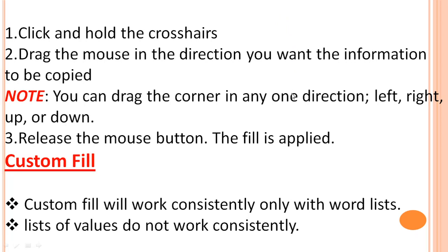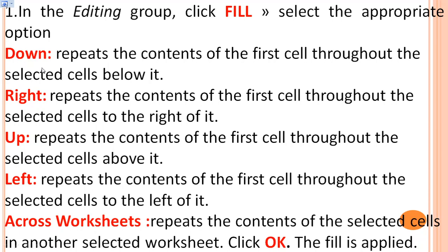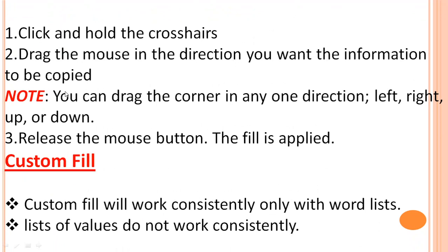Drag the mouse in the direction you want the information copied — down, right, up, or left. Overall, AutoFill is used when you want to automatically fill data such as days, months, or numbers without typing manually one by one. For example, if you type Sunday, Excel will automatically fill Monday, Tuesday, and so on, instead of typing each day manually.